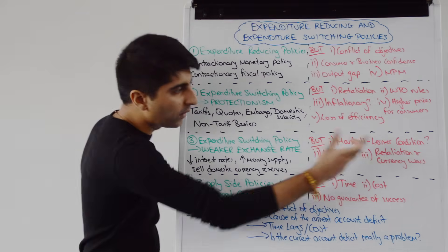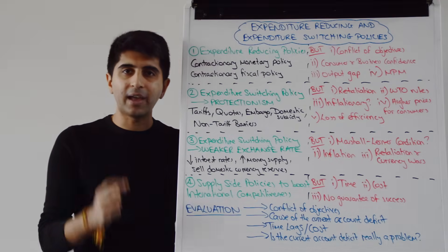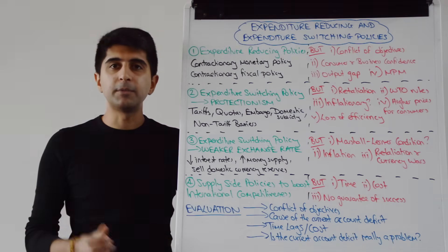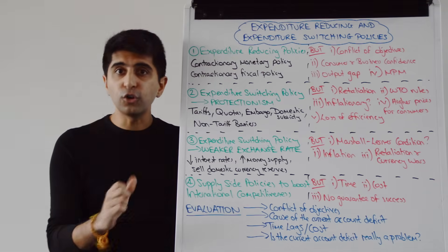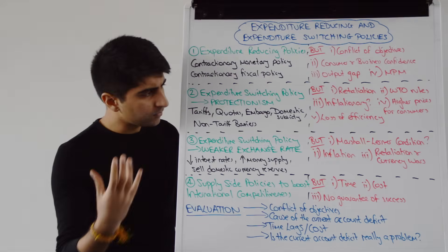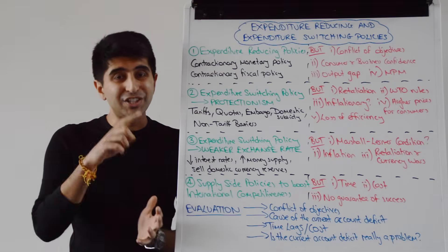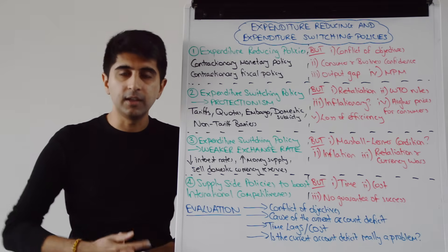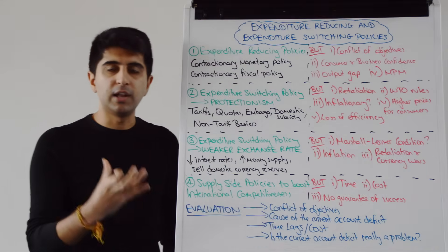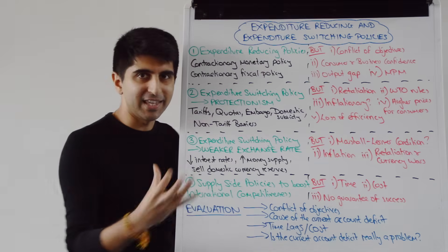However, you have to consider whether the Marshall-Lerner condition is being satisfied — questioning the price elasticity of demand for exports and for imports. If the PED of exports plus the PED of imports does not sum to greater than 1, then a weaker exchange rate is not going to improve a current account deficit — it will actually make it worse. In the short run, the Marshall-Lerner condition will likely not hold and we will see a J-curve effect where initially the current account deficit worsens before it improves. Watch the videos on the Marshall-Lerner condition and the J-curve effect to understand this key evaluative point.